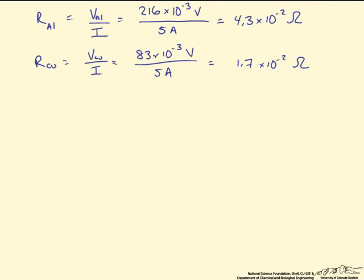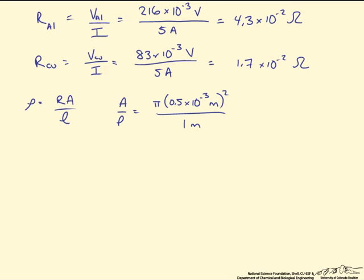The resistivity is equal to the resistance of the material times the cross-sectional area, divided by the length. In this comparison, the cross-sectional area and the length are the same for both materials. The cross-sectional area for a wire or cylinder is pi times r squared. Converting to meters and dividing by the 1 meter length, this results in approximately 7.9 times 10 to the minus 7 square meters. We multiply this value by both resistances to calculate the resistivity of each sample.